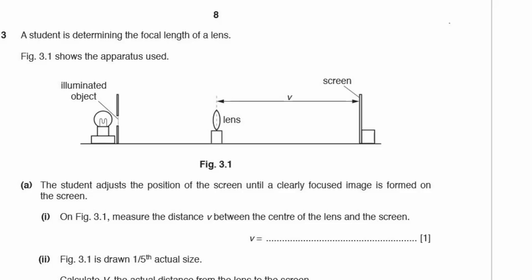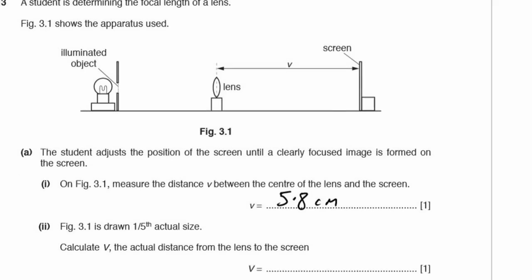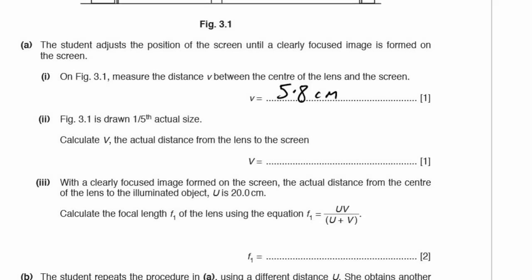Question 3. A student is determining the focal length of a lens. Figure 3.1 shows the apparatus used. The student adjusts the position of the screen until a clearly focused image is formed. On Figure 3.1, measure the distance V between the centre of the lens and the screen. I did that, I've got 5.8 cm. If you're out by a millimeter or two, don't worry. It's possible the entire thing got resized as it was printed out, unless you're using an old exam paper. Figure 3.1 is drawn one fifth of the actual size. Calculate V, the actual distance from the lens to the screen. So 5.8 times 5 gives me 29.0 centimeters. The units aren't provided, you have to write them in.